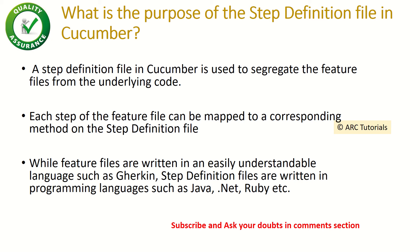What is the purpose of a step definition file in cucumber? A step definition file is where we write the underlying code for each step. It is used to segregate the feature files from the underlying code. Each step of the feature file is mapped to a corresponding method in the step definition file. For example, in the feature file we write 'user clicks on a link', and in the step definition file we implement that step. While feature files are written in Gherkin, step definitions are written in programming languages like Java, Ruby, or .NET.